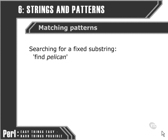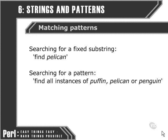So for instance, instead of simply searching for only the word pelican within a larger string, we can look for any instances of any of three or more words such as puffin, pelican, or penguin. We don't know which ones are going to appear within the larger string, but we can simply ask Perl to find any instances that it can within the larger string and return those to us.